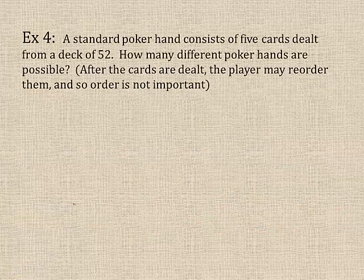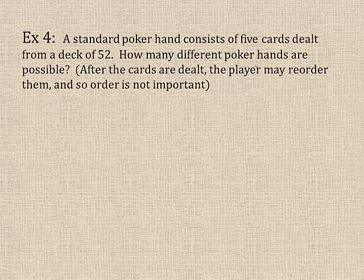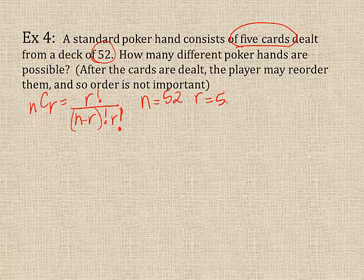Okay, so we're going to try another example of a combination. It says a standard poker hand consists of five cards. That's important. Five cards dealt from a deck of 52 cards. How many different poker hands are possible? After the cards are dealt, the player may reorder them, so the order is not important. Why does that matter? If order's important, then we would go back to the fundamental counting principle. But since order's not important, we use the combination. So, remember, the equation looks like this. n factorial over n minus r factorial times r factorial.